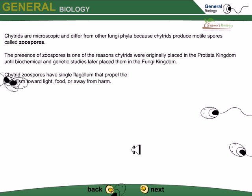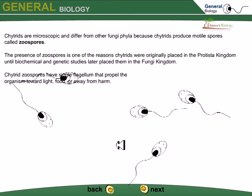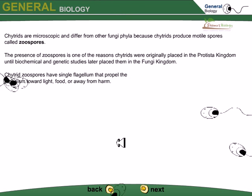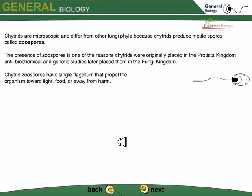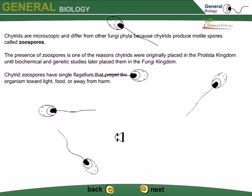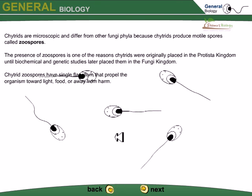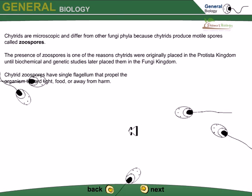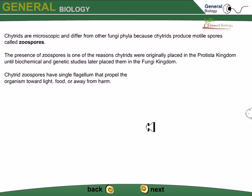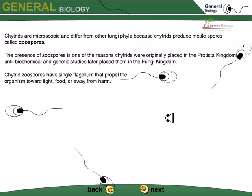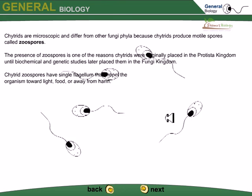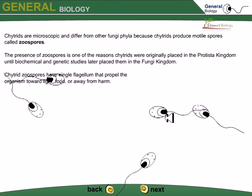Chytrids are microscopic and differ from other fungi because they produce motile spores called zoospores. The presence of zoospores is one of the reasons chytrids were originally placed in the Protista kingdom, until biochemical and genetic studies later placed them into the fungi kingdom. They are actually more related to us because the structure of these zoospores is very similar to normal eukaryotic spores and eukaryotic flagellated sperm.